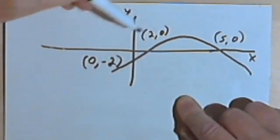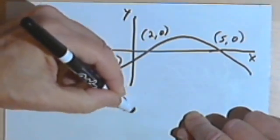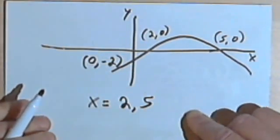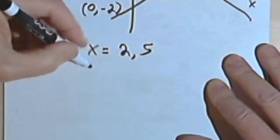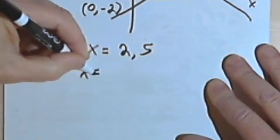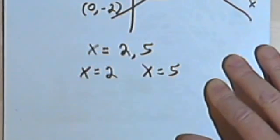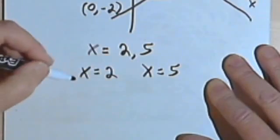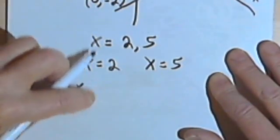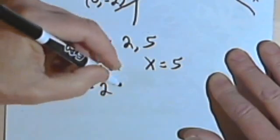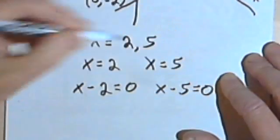So I can take those two roots, I can write x equals 2 and 5, and as I've done in a previous video, I can rewrite them as x equals 2 and x equals 5. And then I can set both of those equations to zero. I can have x minus 2 equals zero and x minus 5 equals zero.